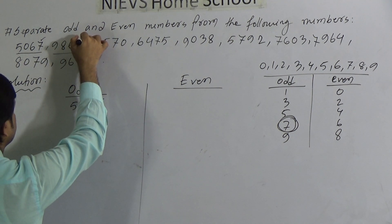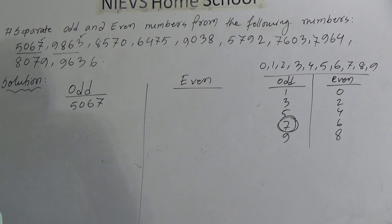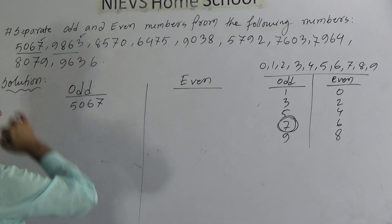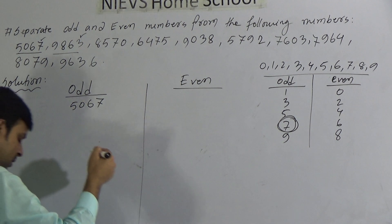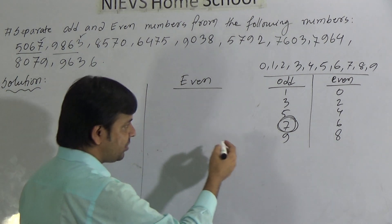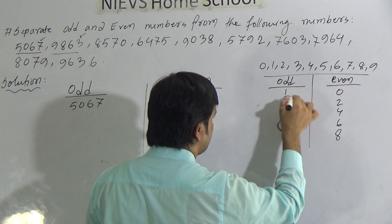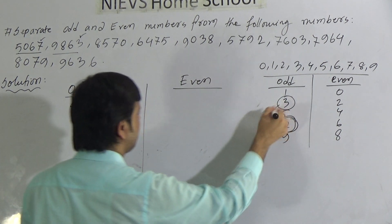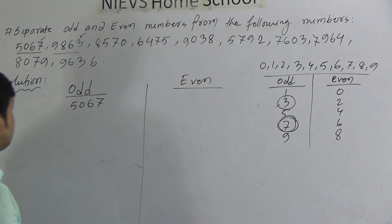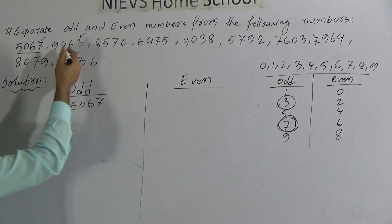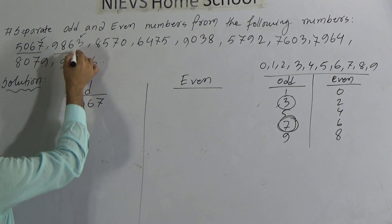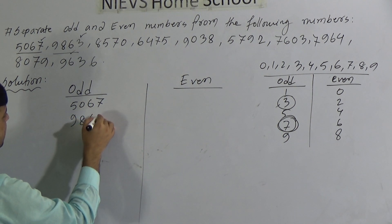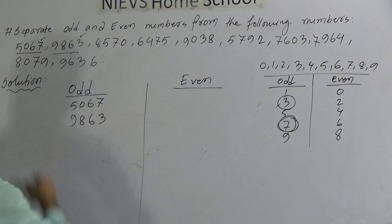Now see the next number. Here the unit place is 3. The number is 9863 and the unit place is 3. We can see that 3 is in odd. As 3 is odd, the number containing 3 in the unit place will be odd. So this number 9863 is also odd.